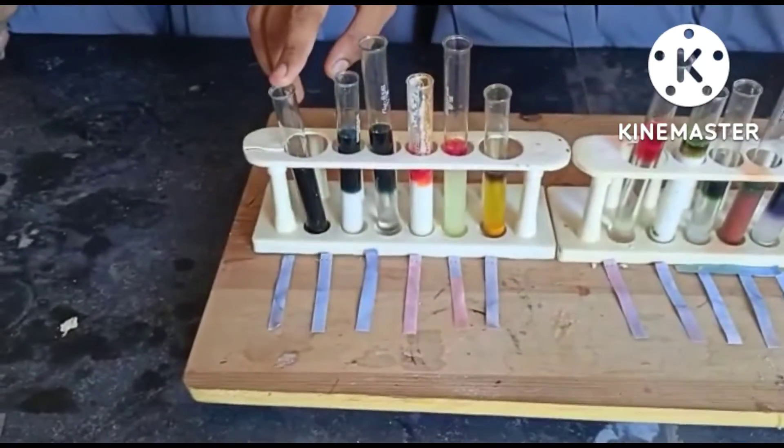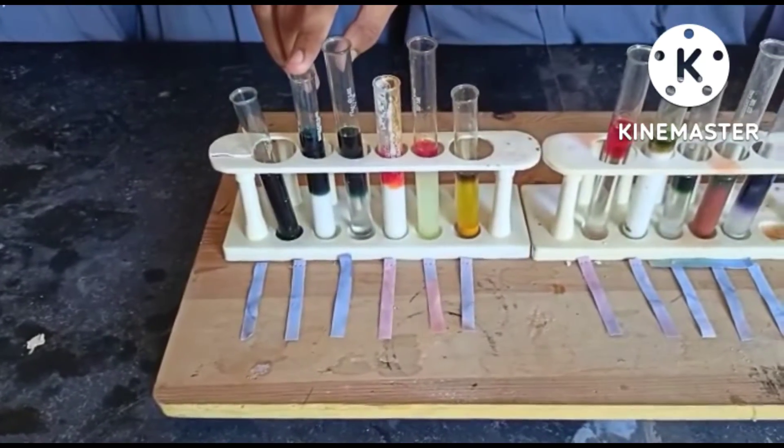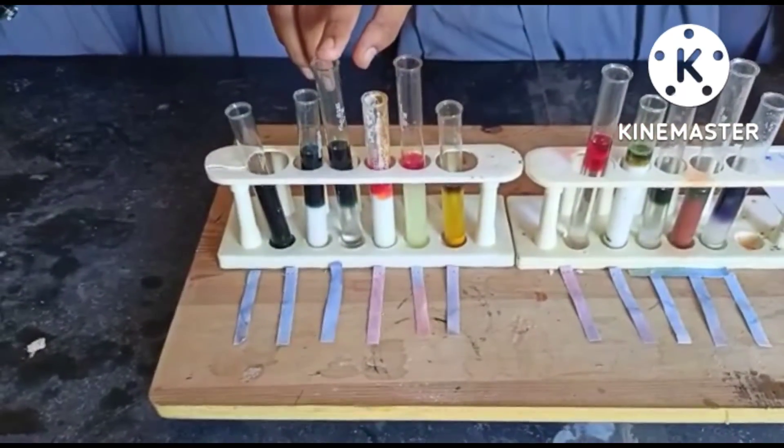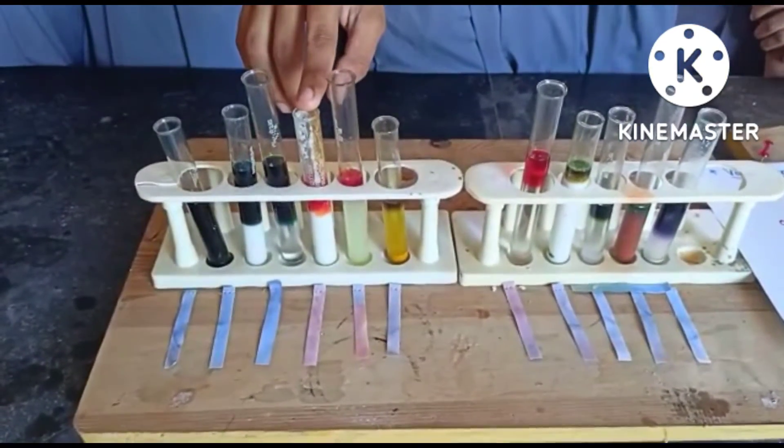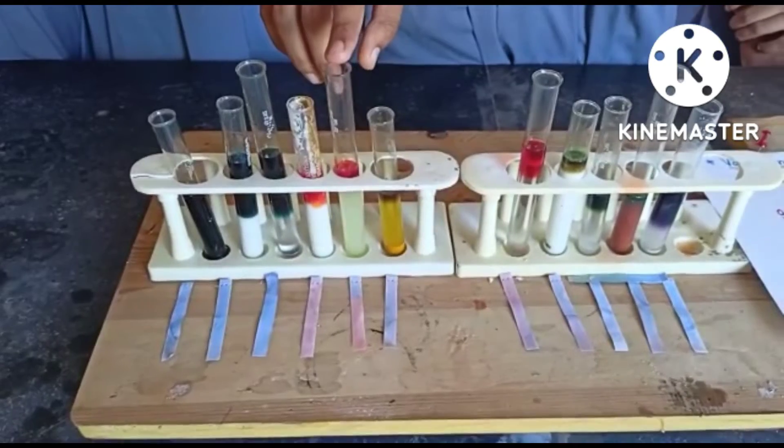The pH of tap water is 6.5 to 8.5. The pH of baking soda is 8.3. The pH of distilled water is 5.4 to 5.7. The pH of curd is 4.5 to 5.5. The pH of lemon juice is 2 to 3.